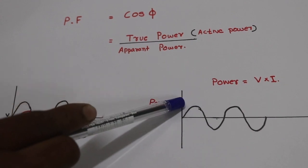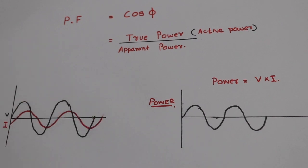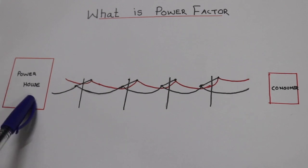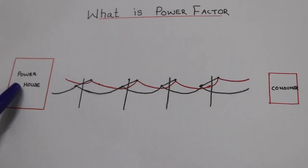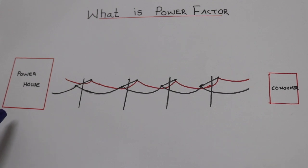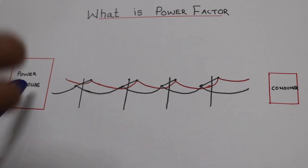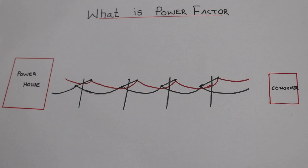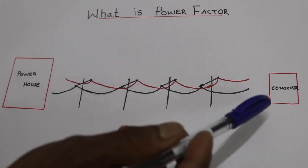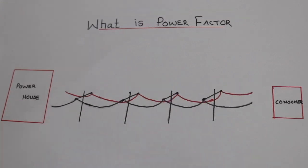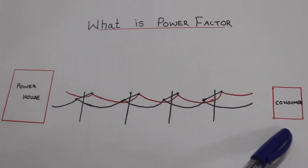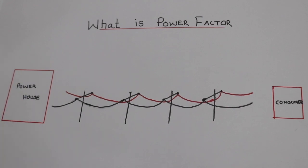The waveform has a positive side and a negative side — that is, positive power and negative power. The powerhouse sends power through a transmission line. There is positive power flowing from the powerhouse to the consumer, and also a negative power portion.